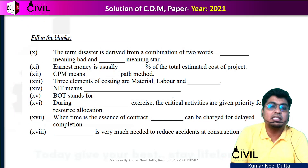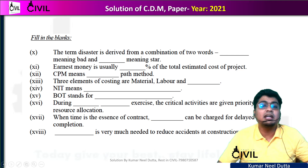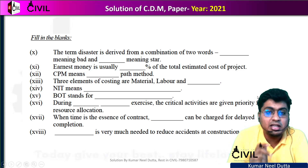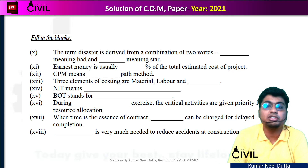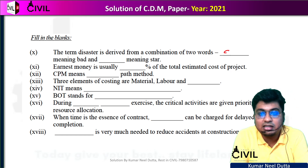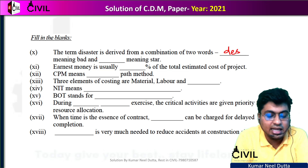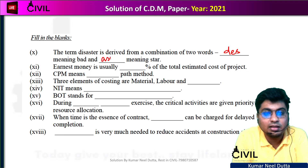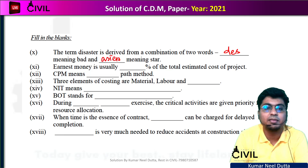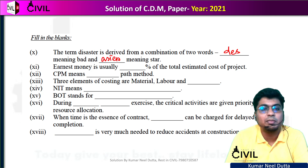Next, fill in the blank: the term disaster is derived from the combination of two words. Disaster is a French word. 'Dis' means bad, and 'aster' (A-S-T-E-R) means star. So disaster literally means bad star.